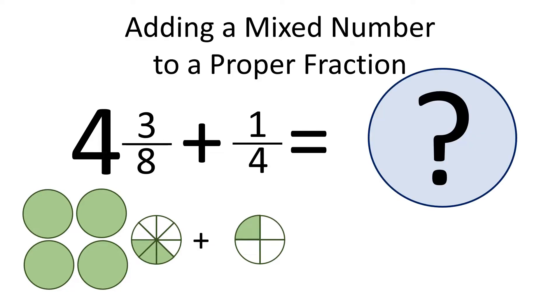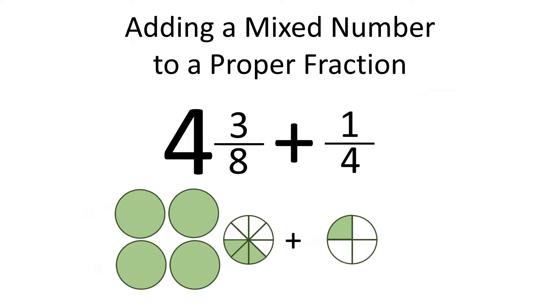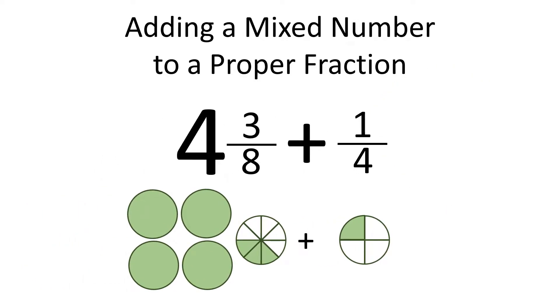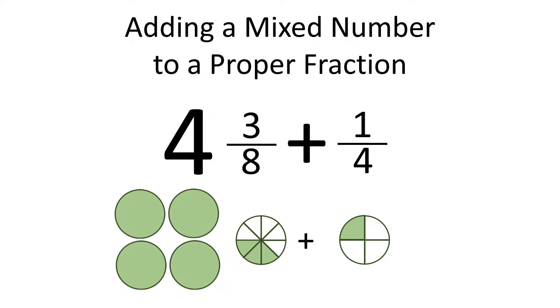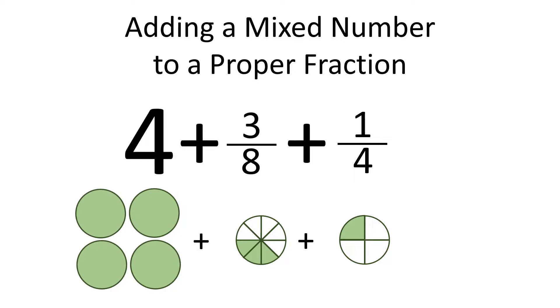What should we do to add a mixed number to a proper fraction? We can rewrite 4 and 3 eighths as 4 plus 3 eighths. That way we have 4 plus 3 eighths plus 1 fourth.